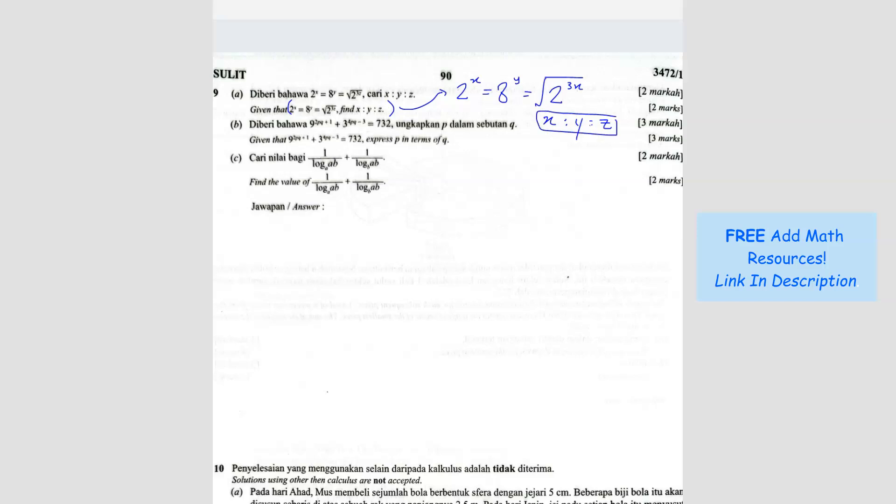To find this ratio, we form a pair first. We can use the first pair, so 2^x equals 8^y. I can change it to the same base: 2^x equals 2^3y. Since they are the same base, I can say x equals 3y.